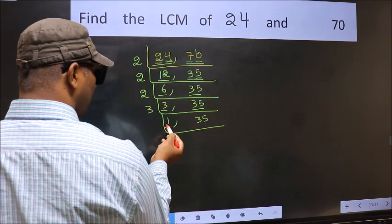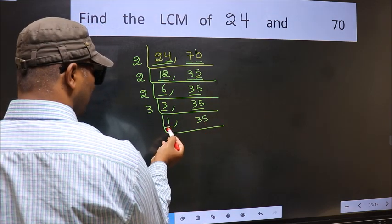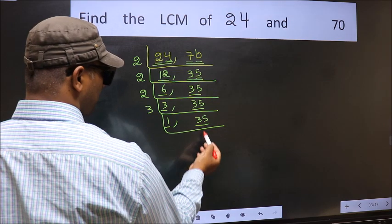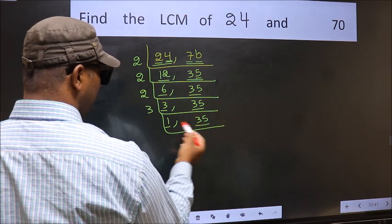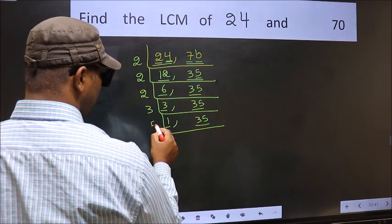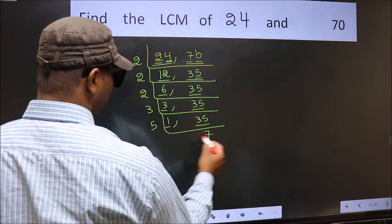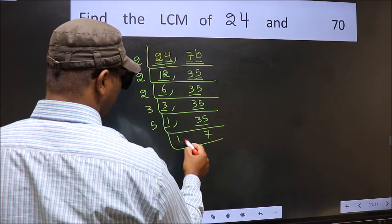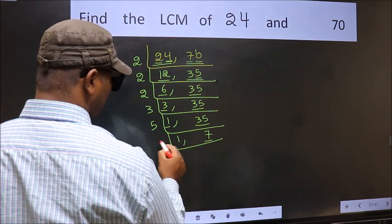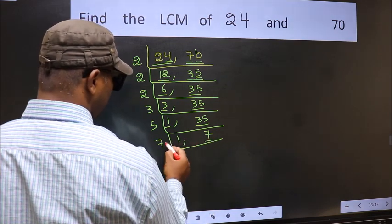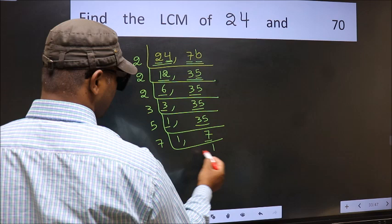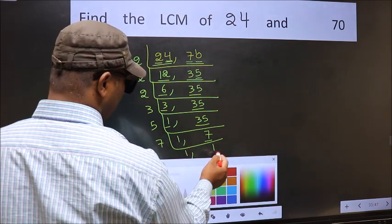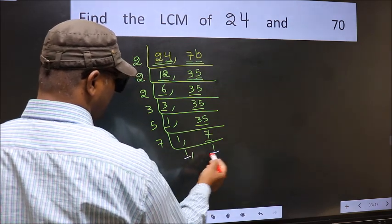Now we got 1 here, so focus on the other number 35. 35 is 5×7. Now we have 7 — 7 is a prime number, so 7×1 is 7. So we got 1 in both places.